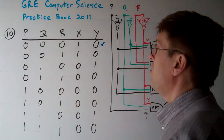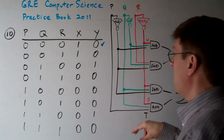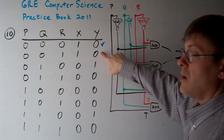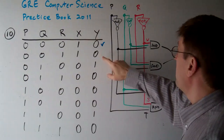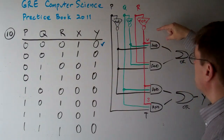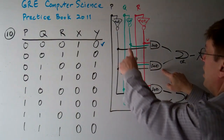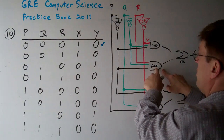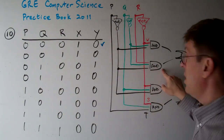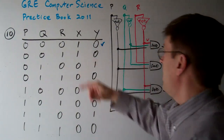With P and Q being zero but R is one, because P and Q are zero, Y is going to still be zero. Now let's look at X. If R is one, then that input is going to be a one, not Q is going to be a one, and not P is going to be a one. So X will be a one, because we can satisfy one of those conditions. This checks out.